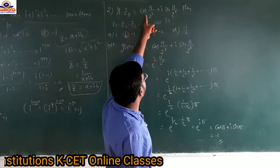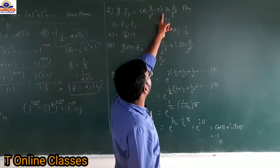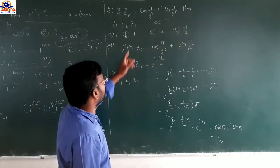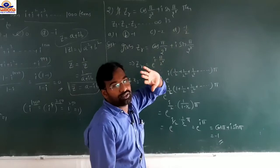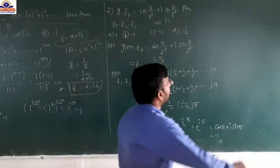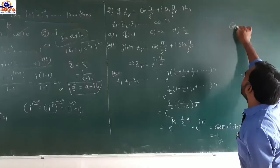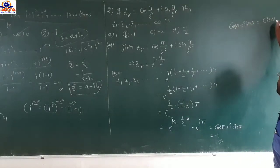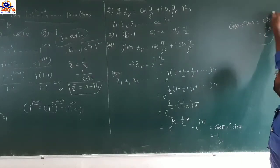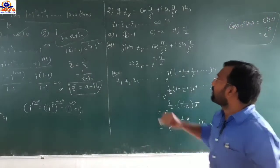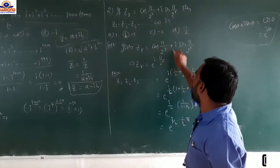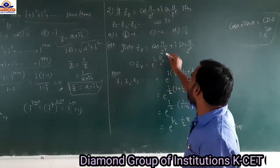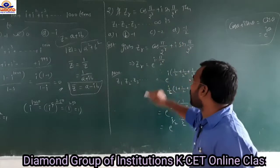If z_r equals cos(π/2^r) plus i·sin(π/2^r), then find z₁ times z₂ times z₃ and so on up to infinity. Generally, cos θ plus i·sin θ can be written as e^(iθ). So here z_r equals e^(i·π/2^r), since in place of θ we have π/2^r.